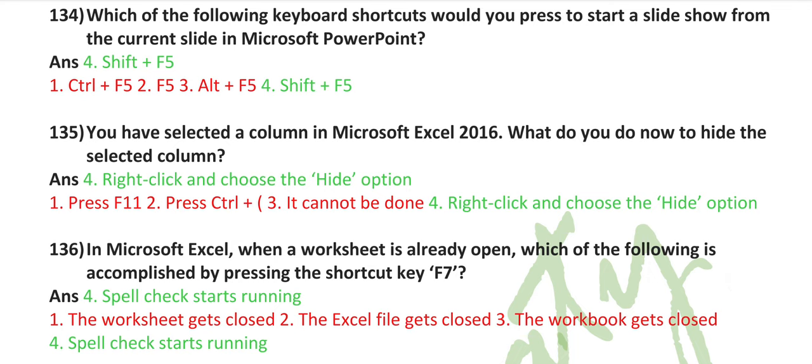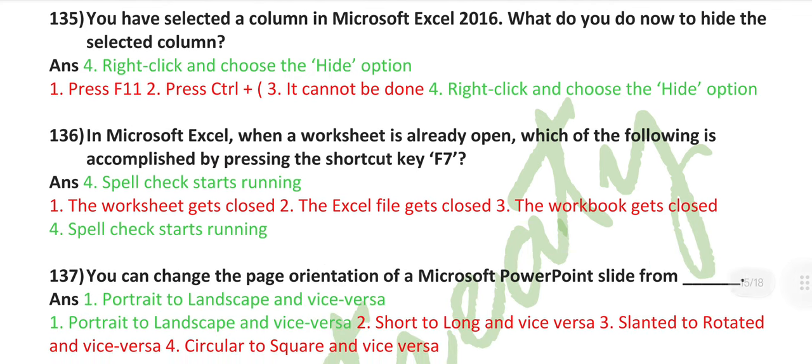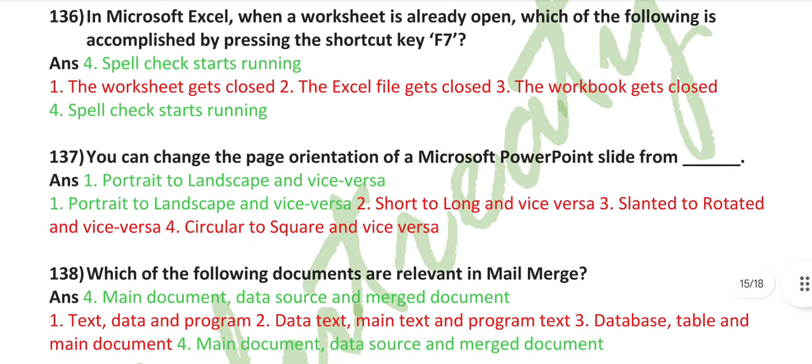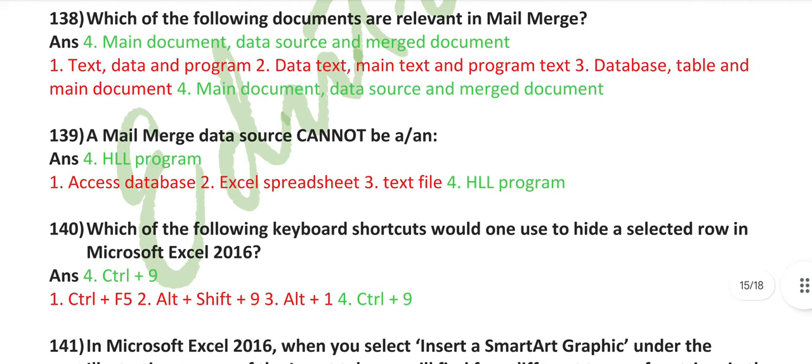Which of the following keyboard shortcut would you press to start a slide show from the current slide in Microsoft PowerPoint? Shift plus F5. You have selected a column in Microsoft Excel 2016. What do you do now to hide the selected column? Right-click and choose the hide option. In Microsoft Excel, when a worksheet is already open, which of the following is accomplished by pressing the shortcut key F7? Spell check starts running. You can change the page orientation of a Microsoft PowerPoint slide from portrait to landscape and vice versa.